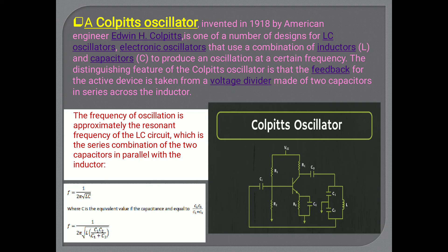In the diagram, you can see that two capacitors are connected in series across the inductor. The frequency of oscillation is approximately the resonant frequency of the LC circuit, which is the series combination of the two capacitors in parallel with the inductor. Therefore the formula becomes F = 1 / (2π√(LC)), where L is the inductance of the inductor and C is the equivalent capacitance. If there are two capacitors, C = C1·C2 / (C1 + C2), so the frequency becomes F = 1 / (2π√(L · C1·C2/(C1+C2))).